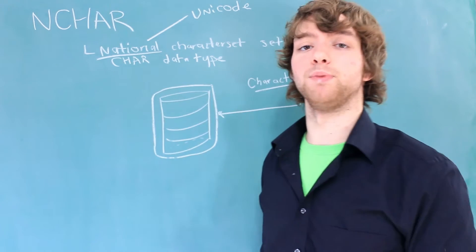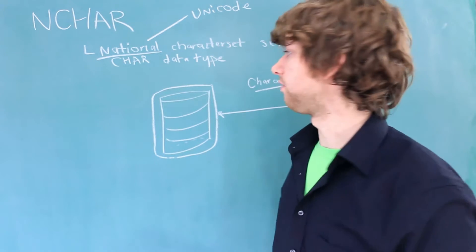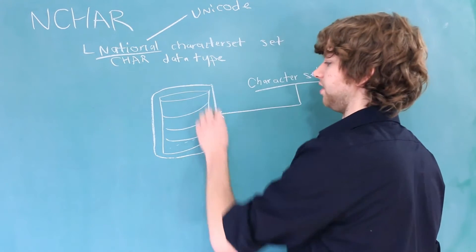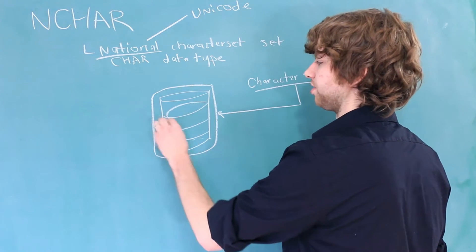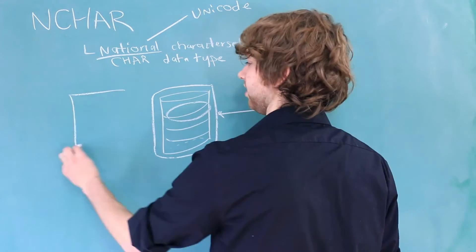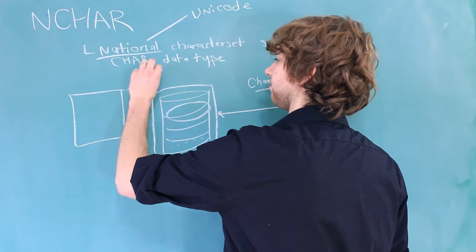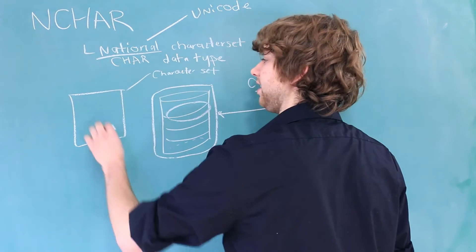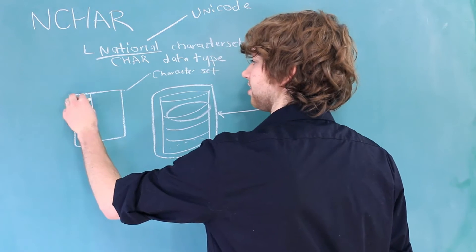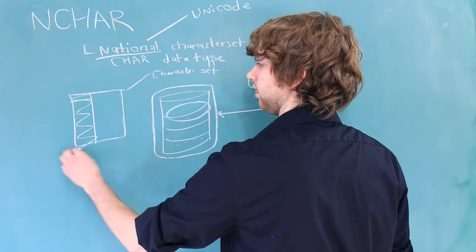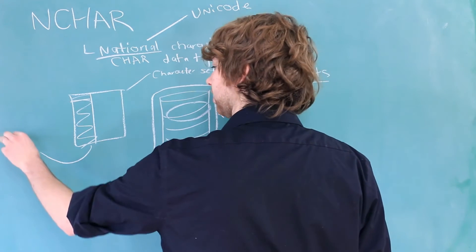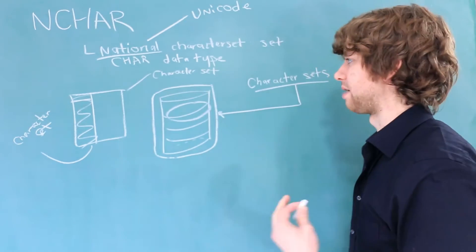This is in contrast to other database management systems where you can often create a character set at the database level, at an individual table level. So if we had an individual table, we could say this is of a certain character set, and even column levels. So we could take this individual column and say this is of a certain character set. Oracle doesn't work the same way.